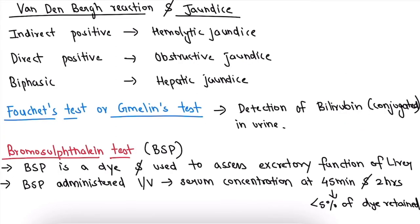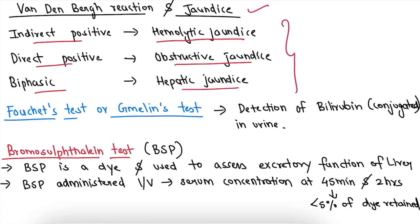Now let's study the relation between Van den Bergh reaction and jaundice. If the test is indirect positive, then the person is suffering from hemolytic jaundice. If the test is direct positive, then the person is suffering from obstructive jaundice. If the test is biphasic, then the person is suffering from hepatic jaundice. The next test is Fouchet's test or Melin's test, used for detection of bilirubin in urine — especially conjugated bilirubin, since it is soluble in water and excreted in urine, unlike unconjugated bilirubin.